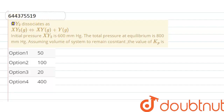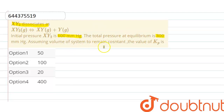Hello everyone. Here the question is: XY₂ dissociates as given by the reaction. The initial pressure of XY₂ is 600 mmHg. The total pressure at equilibrium is 800 mmHg. Assuming the volume of the system remains constant, calculate the value of Kp.